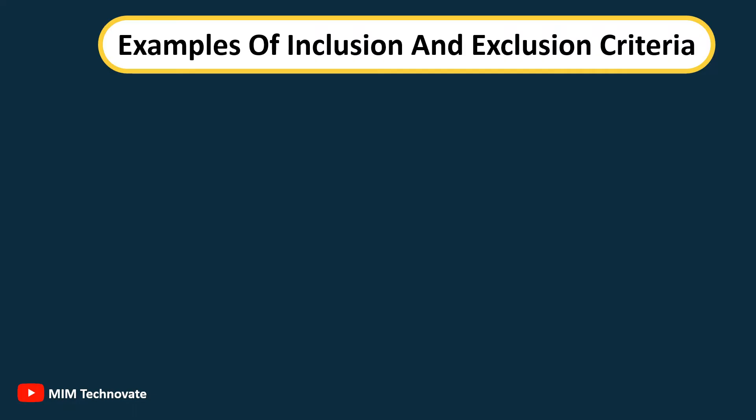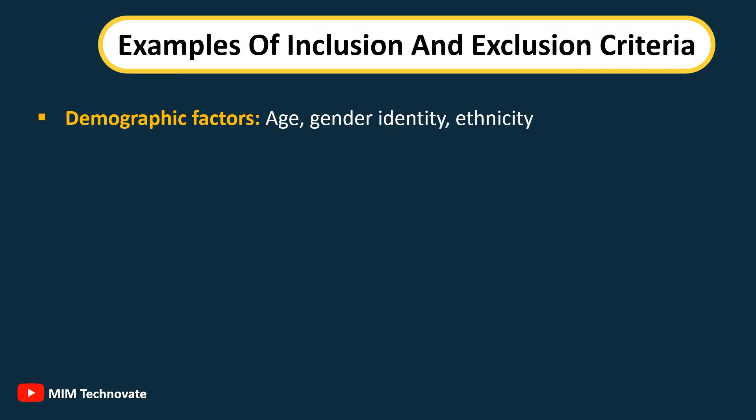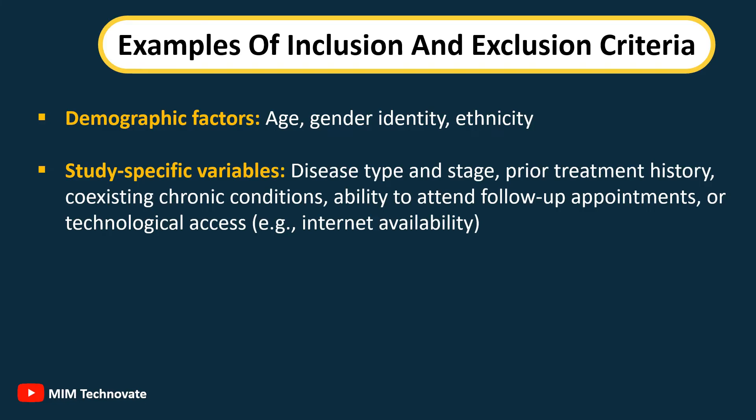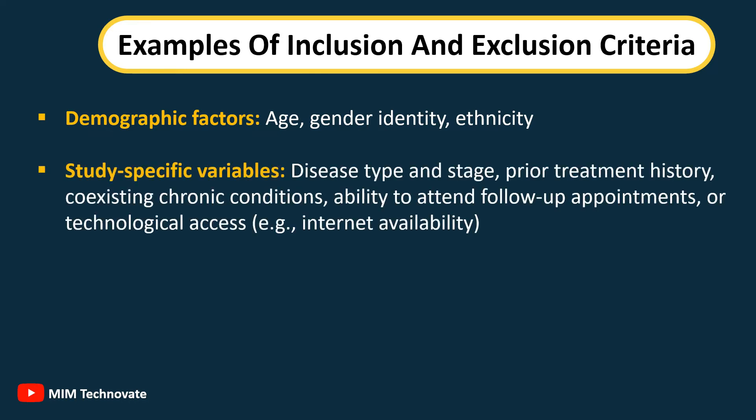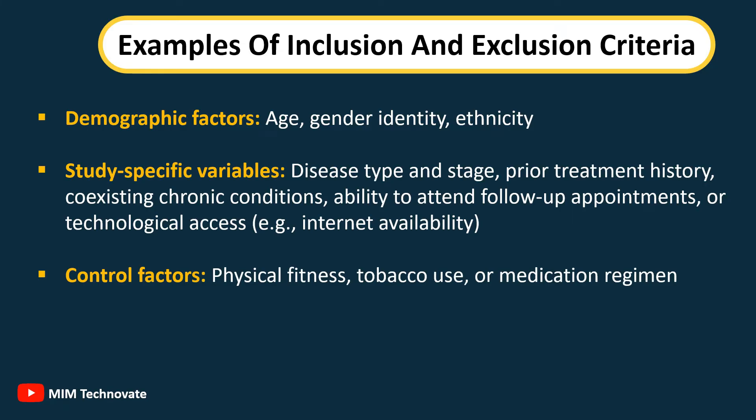Common examples of inclusion and exclusion criteria include: demographic factors such as age, gender identity, and ethnicity; study-specific variables including disease type and stage, prior treatment history, coexisting chronic conditions, and ability to attend follow-up appointments or technological access such as internet availability; and control factors such as physical fitness, tobacco use, or medication regimen.